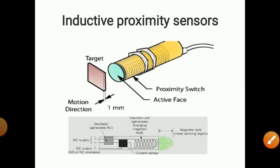When a metallic object comes near the magnetic field, eddy currents are developed on the surface of the object, and some energy is lost from the original magnetic field. Because of this, the sensor detects the change and gives an output — either on or off — indicating whether the object is present or not. This is how the inductive proximity sensor works.